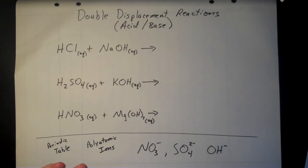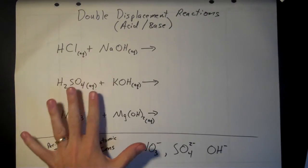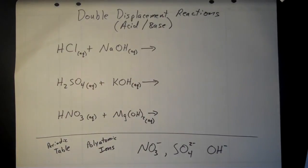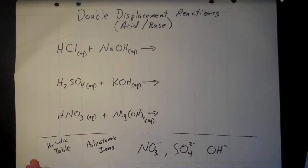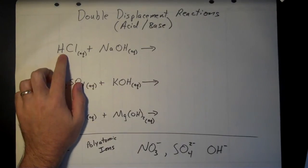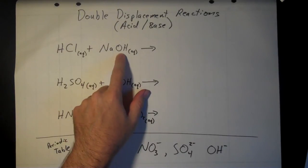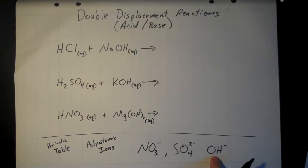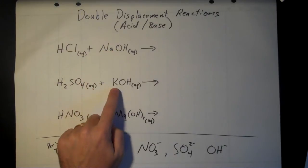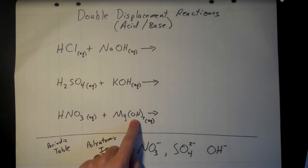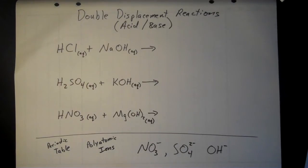I've written all three of these with the acid written first, but it doesn't have to be that way — it's kind of like 2+3 or 3+2, they both equal 5, so it doesn't matter which order they are. HCl is the acid, and the base is typically going to be a metal with the hydroxide ion. The hydroxide ion has a negative 1 charge. Here we have sodium with hydroxide, potassium with hydroxide, and magnesium with two hydroxides as our bases.